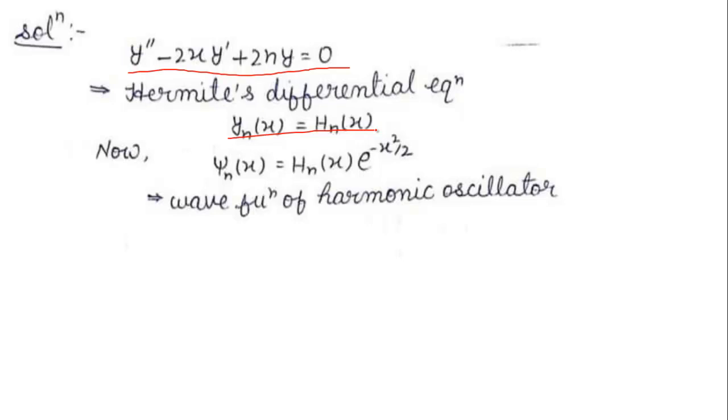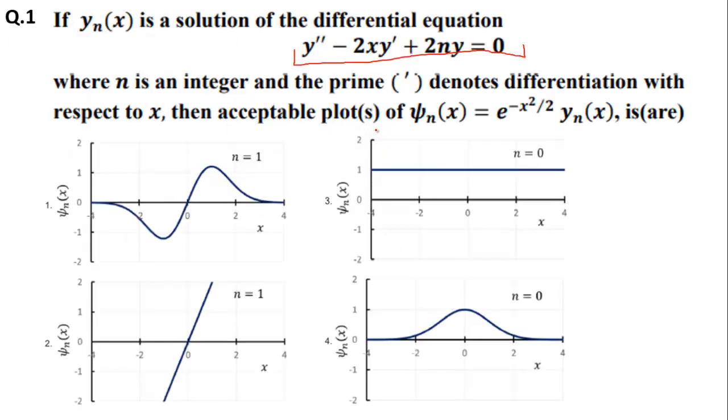Now ψ_n(x) = H_n(x) e^(-x²/2) is the wave function of the harmonic oscillator, so this is the Hermite polynomial.